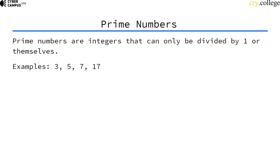First, what are prime numbers? Prime numbers are integers that can only be divided by one or by themselves. Common examples are 3, 5, 7, or 17.